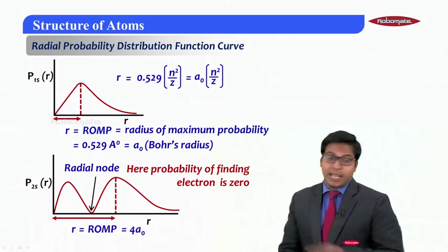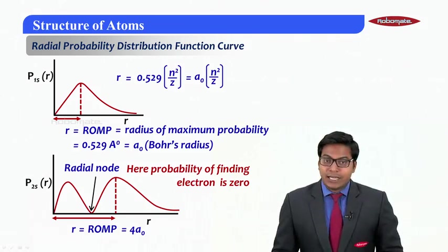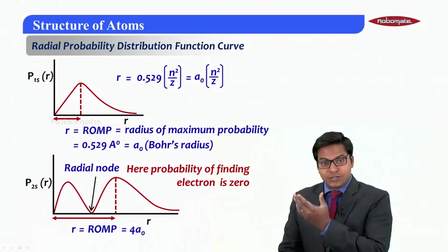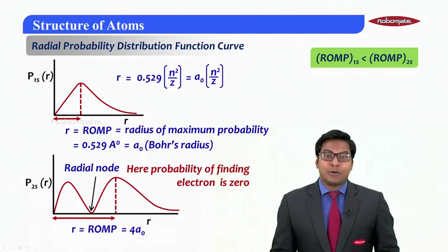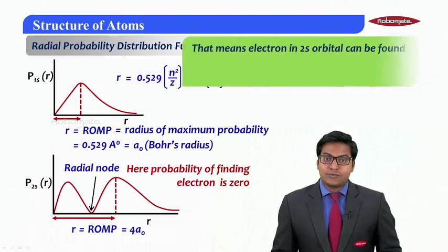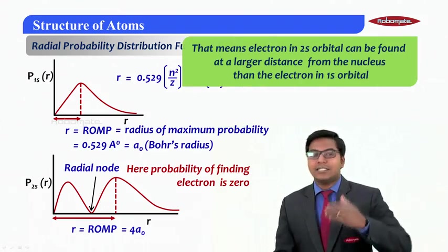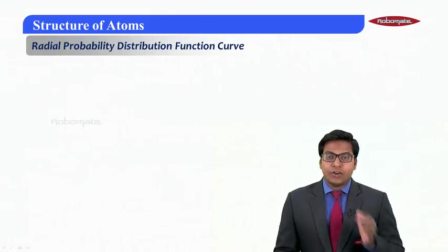This is the maximum distance or the peak where we have the highest probability and this distance amazingly matches to 4a₀, which is again suggesting from Bohr theory that radius will be a₀·n². It is a second orbit so n² gives us 4a₀. So radius of maximum probability of 1s will always be less than 2s. That means electron in 2s is always found at the larger distance from the nucleus compared to the electron in 1s orbital.